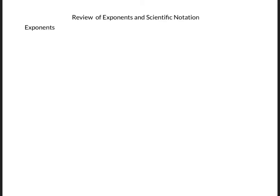Before we do the metric-to-metric conversions, I'd like to review exponents and the form called scientific notation. Let's start by looking at what exponents mean. 10 to the power of 2 is the same as 10 times 10, which is 100. 10 to the power of 3 is 10 times 10 times 10, which is 1,000.